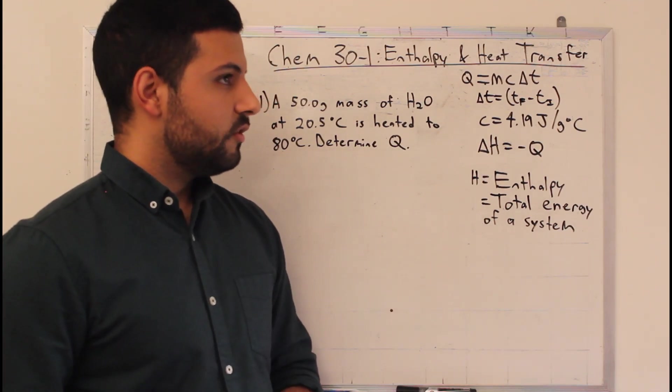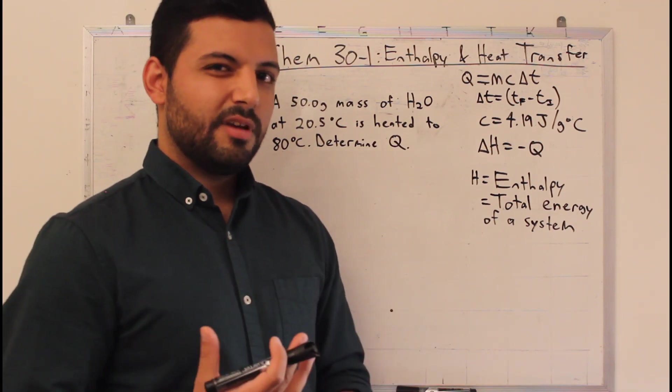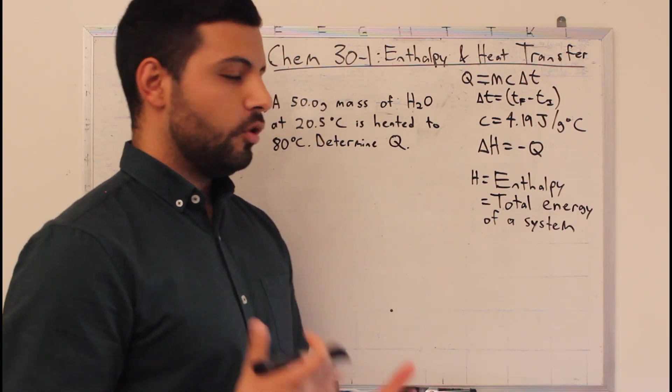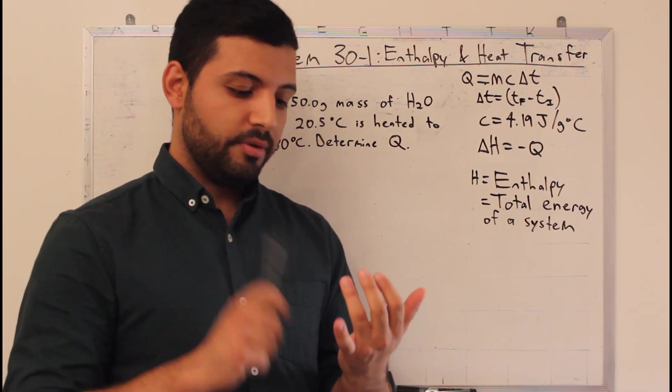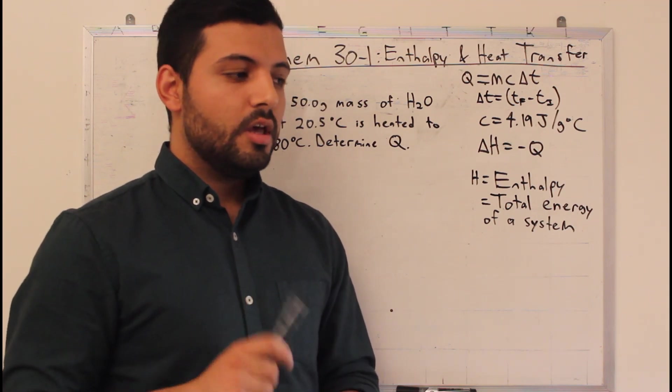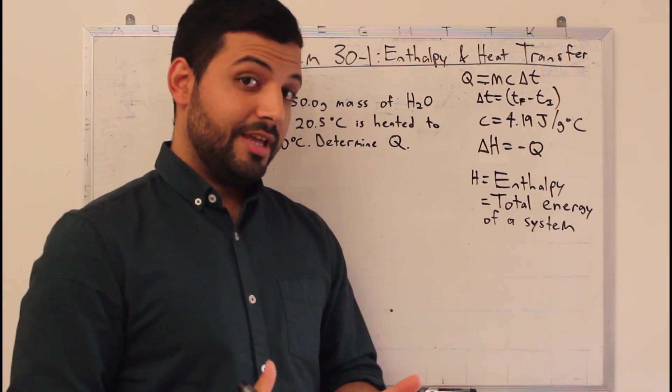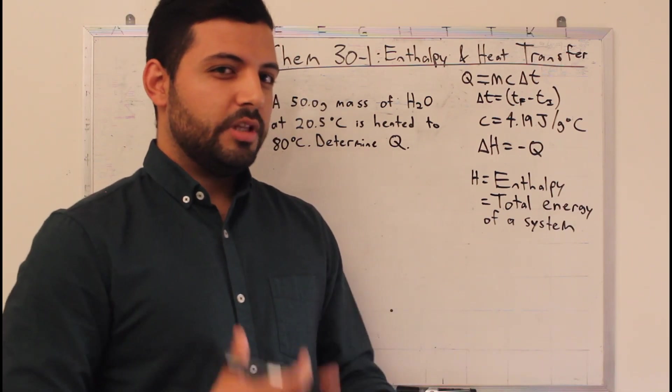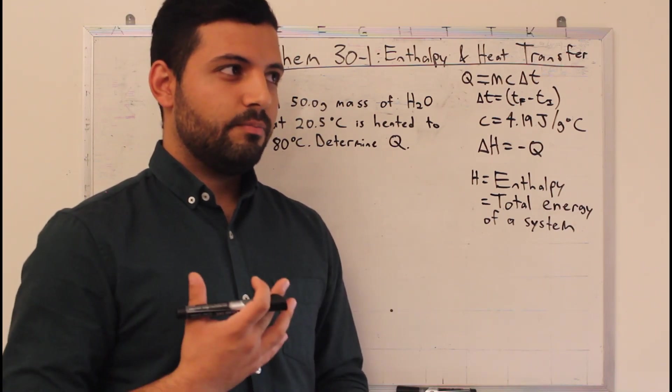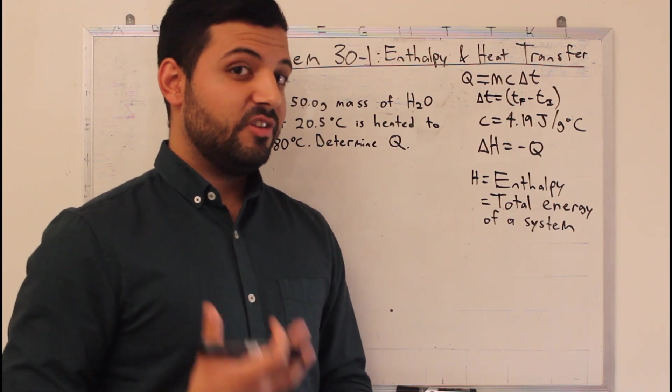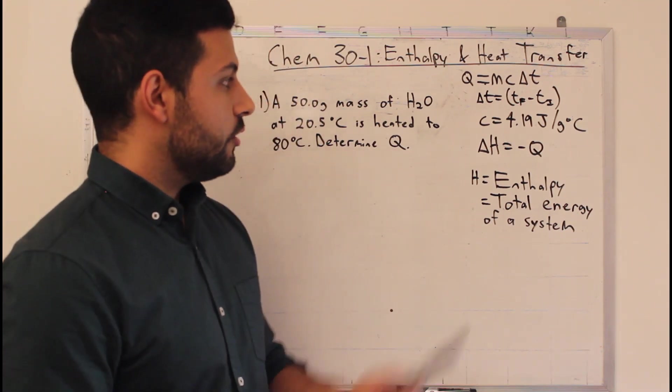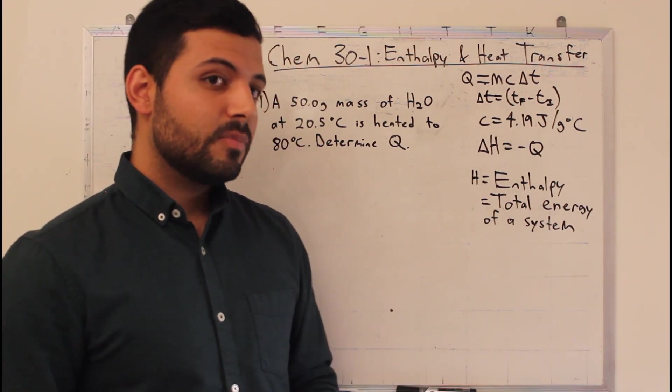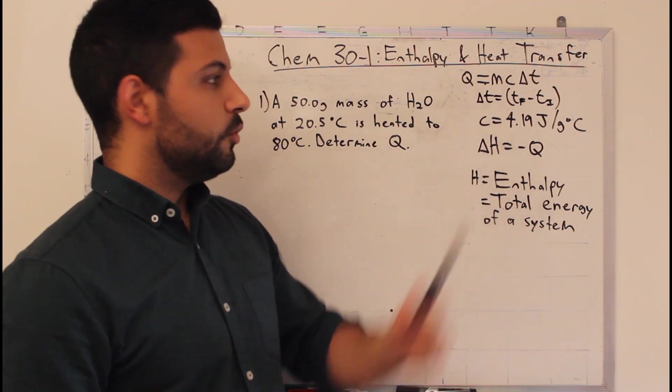Enthalpy is kind of a chemical term to mean the total energy of a system, meaning the total potential energy, kinetic energy, elastic energy. All these energies put together is called the enthalpy of a system. It's not a really useful concept because it's almost impossible to measure it specifically, but we can measure the change in enthalpy, and that is our negative Q, which we found up here.